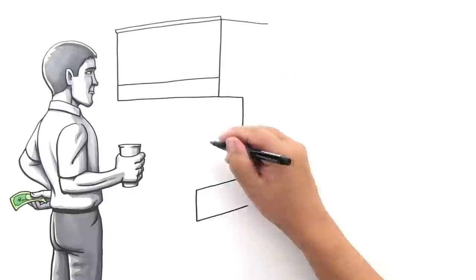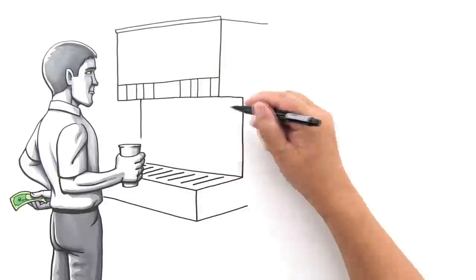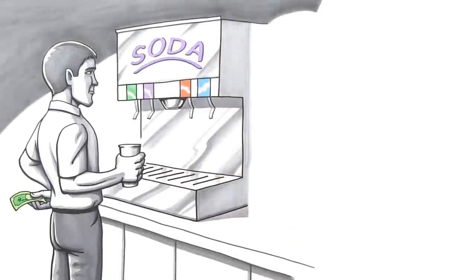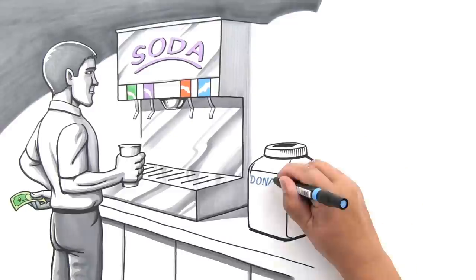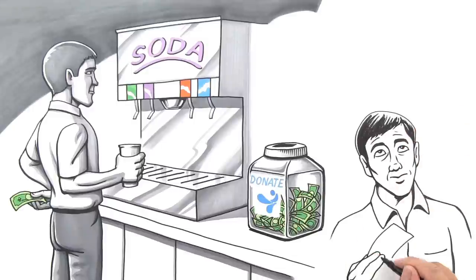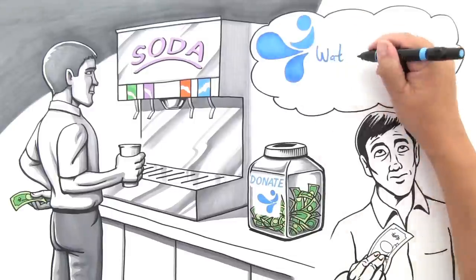But what can it really buy you? An hour at the meter? A pack of gum? A can of soda? There aren't many things a dollar can buy. And yet, with Atlas Copco's Water For All project, you can change the lives of thousands of people around the world for just one dollar.